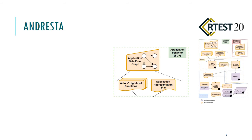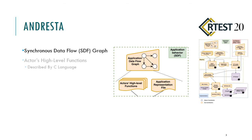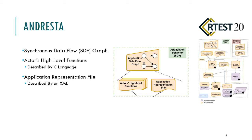The first input of UNRESSA is application behavior. We can represent applications using data flow graphs, and UNRESSA uses synchronous data flow graphs as its input. SDFs have several actors and several edges among them. Each actor has a functionality that we can represent using high-level languages like C. We can also represent the connections between actors using an external file.